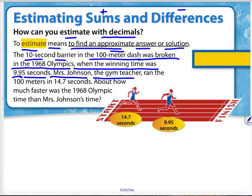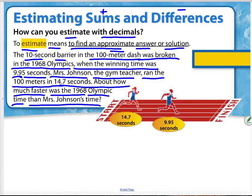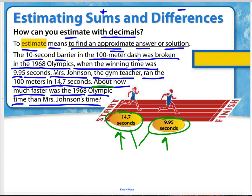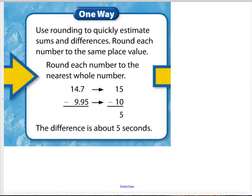The ten-second barrier in the 100-meter dash was broken in the 1968 Olympics, when the winning time was 9 and 95 hundredths seconds. Mrs. Johnson, the gym teacher, ran the 100 meters in 14 seconds and 7 tenths of a second. About how much faster was the 1968 Olympic time than Mrs. Johnson's time? The word that tells us to estimate is the word 'about.' The operation here would be subtraction, because you're talking about a difference.